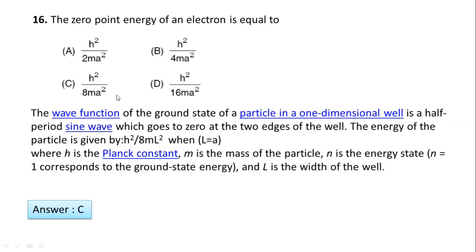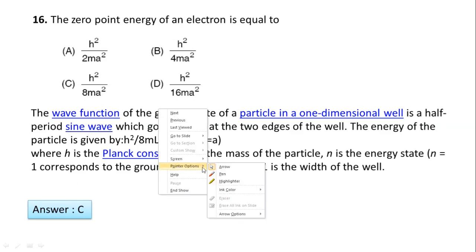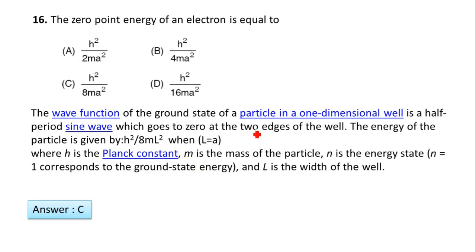Next question: Zero point energy of an electron is equal to—here given options. Listen here: the wave function of the ground state of a particle in one-dimensional well is a half-period sine wave which goes to zero at the two edges of the well.